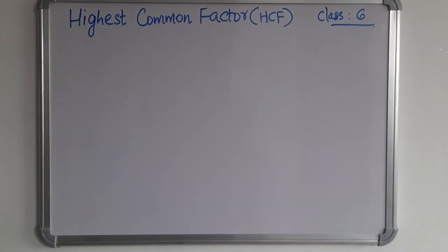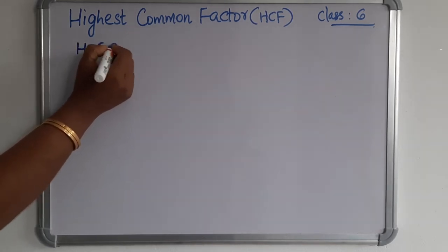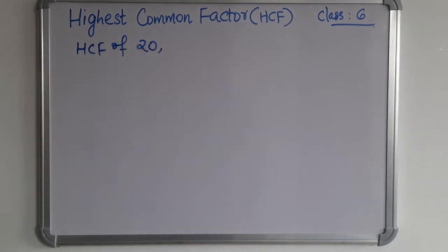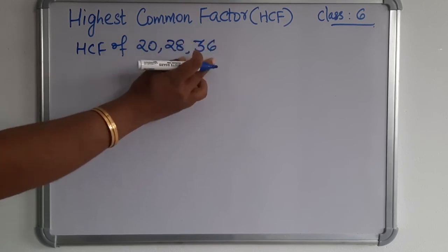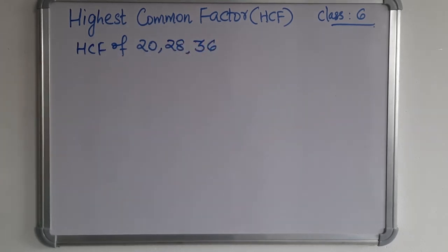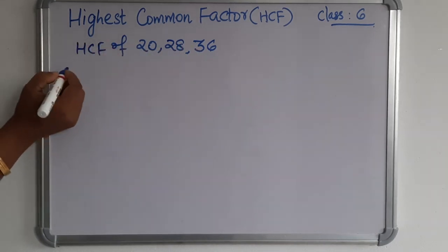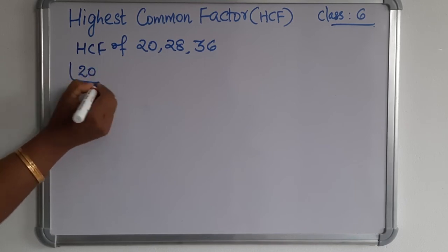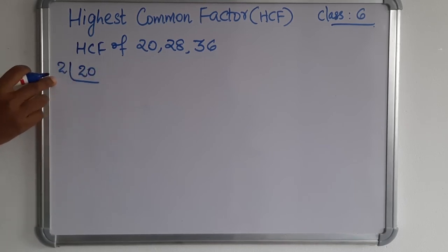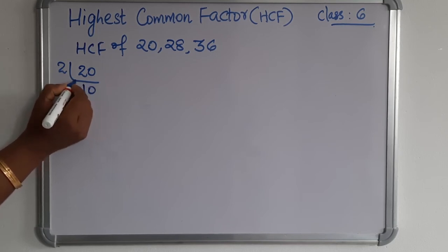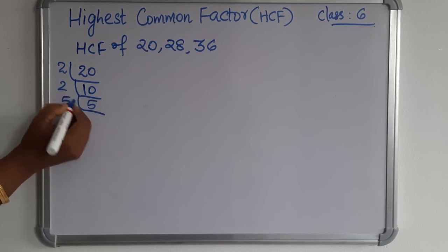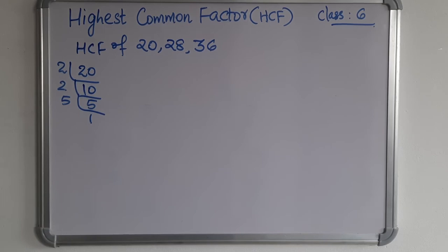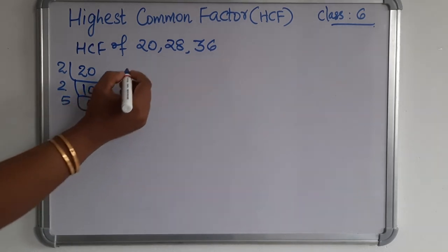So for that we can take three numbers: HCF of 20, 28, and 36. So these three numbers' HCF we are going to find out. So all these numbers' prime factorization you can write. That already you studied. So here we want to take two because it is an even number. So ten times two — again two. So five, two fives are ten, then five, the next number is one. This is the prime factorization of twenty.